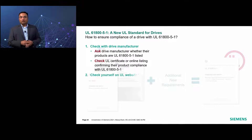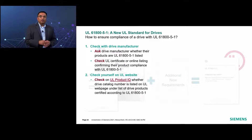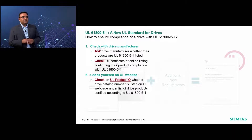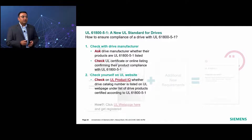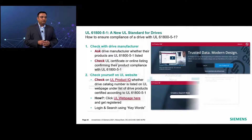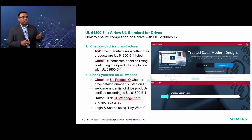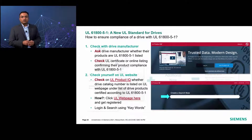The second method is to check yourself on the UL website. You can check on the UL Product IQ — that's the UL webpage where drive catalog numbers are listed. You can verify whether the drive products you are using are certified according to 61800-5-1. Click the link shown on the slide, register using your email and password, then log in and search using the keywords in the search box under the header 'Create a Search Now.'